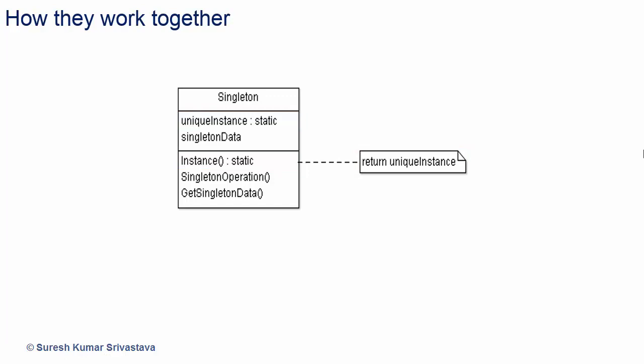Let's see how the singleton class will work. The client uses the instance method of the singleton class to get the instance of this class. The instance method checks for the instance — if an instance is already created it returns the same; otherwise it creates the instance and returns it to the client. The class has a way to create a single instance and to keep it with the static variable unique_instance.